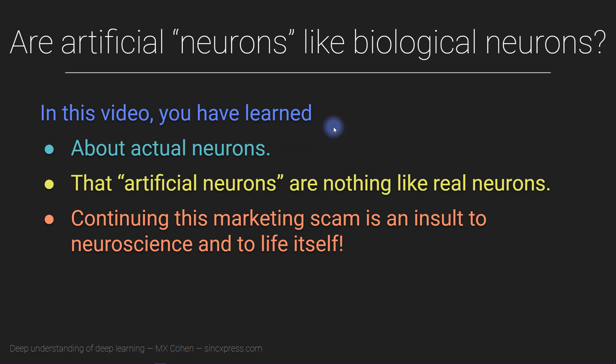I hope you enjoyed this video and learned something new about real neurons. To be totally honest, the terminology doesn't really bother me that much, and of course there's really nothing that can be done about it — so this is a little bit of an exaggeration. But I do think it's important to appreciate that the artificial neurons used in deep learning are really nothing at all like real neurons. Even more importantly, it's critical to continue developing deep learning as an amazing, awe-inspiring technology with incredible potential for improving human society. Thinking that a deep learning model is like a brain is only going to slow down progress.